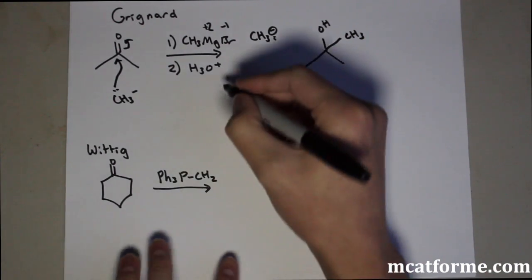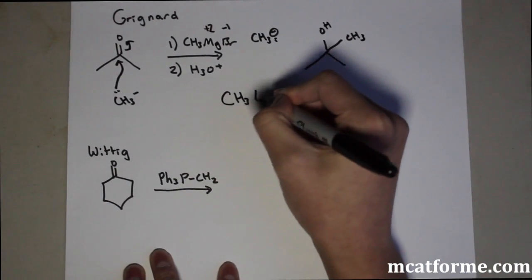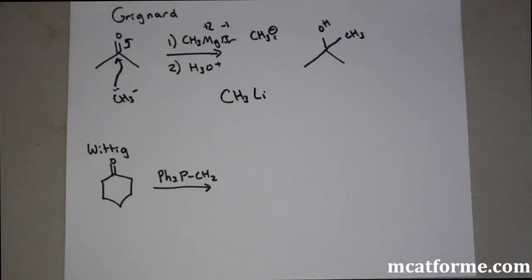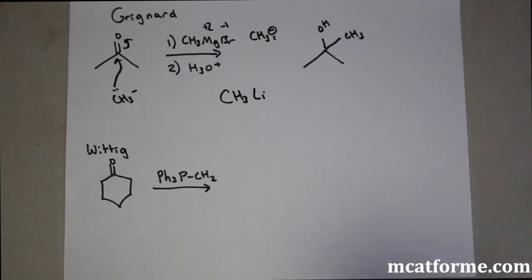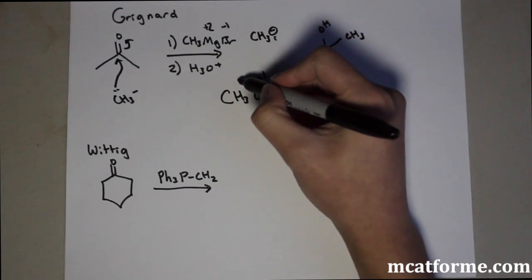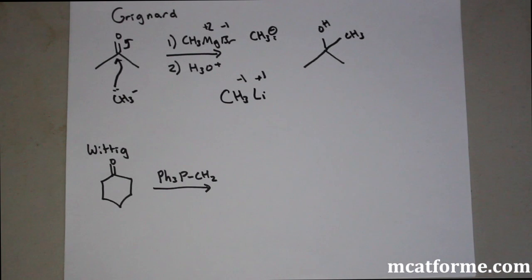We can also use something like CH3Li, and that will replace the CH3MgBr. That should make sense because Li is a +1 charge, so that will give CH3-, so we just treat it like a nucleophile.